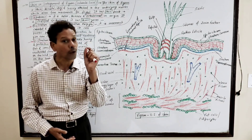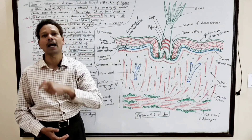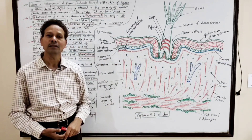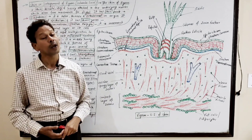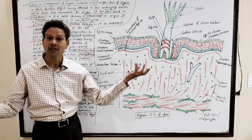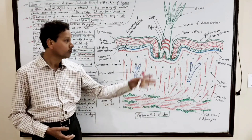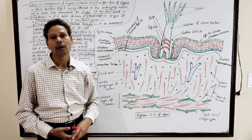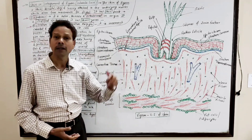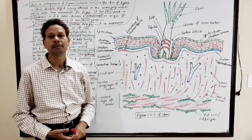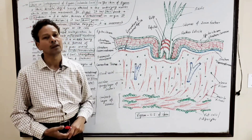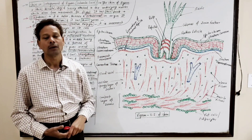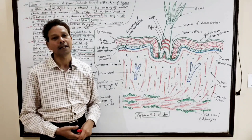Otherwise, the entire skin of birds has no glands except the oil gland or preen gland on the tail region. The skin also has no sweat glands, so it is dry. During hot weather, birds cool themselves by panting, like dogs, because there are no sweat glands on the skin.